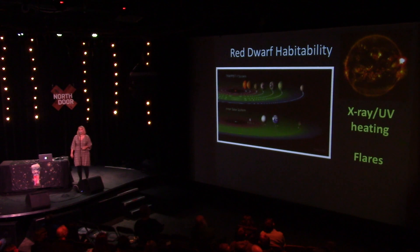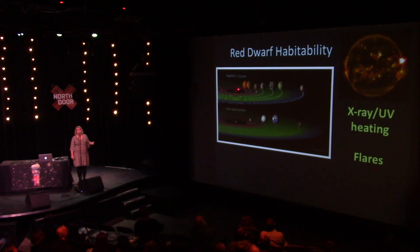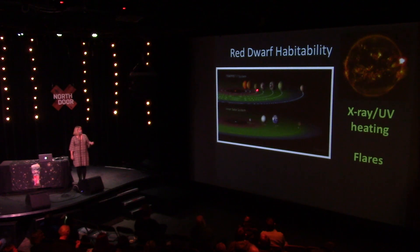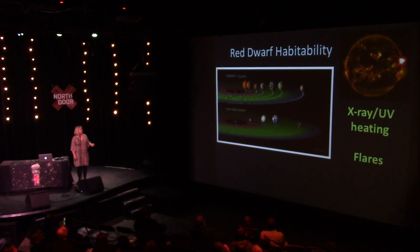We've already found one system where there are three planets that may be in the habitable zone — this is TRAPPIST-1. It's a very small star, about eight percent the mass of the Sun — extremely small, still an active star burning hydrogen, but quite small relative to the Sun. We've found seven rocky planets around this system, and three of them are likely to be in the liquid water habitable zone around that star. So it's possible that those could support life.